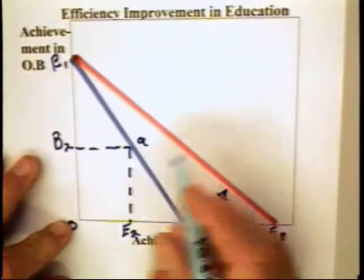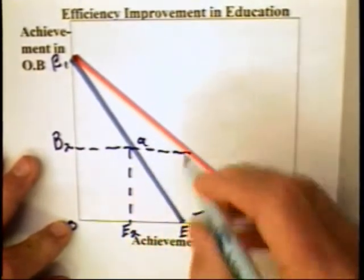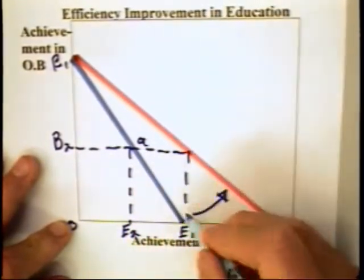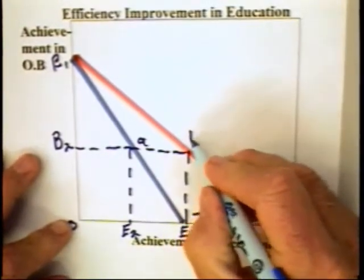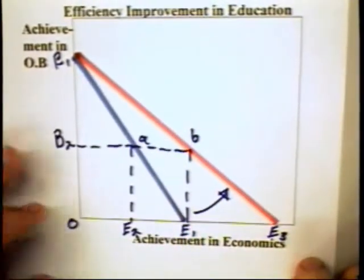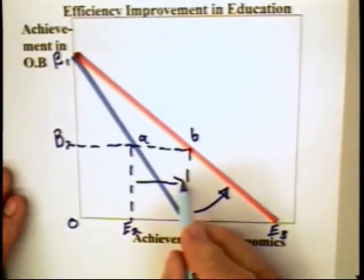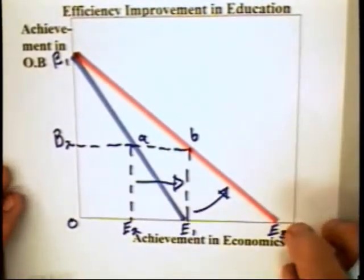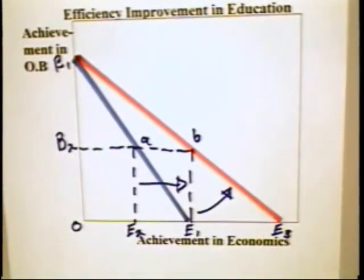With this greater choice set, the individual can move from combination A to combination B, in which case the individual would learn more economics. And this would be what you might expect. If there's a technological improvement in the economics class, you might expect students in that class to learn more.